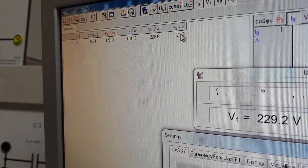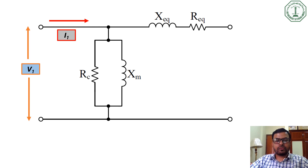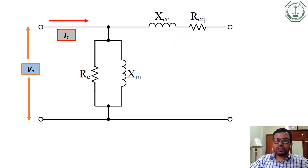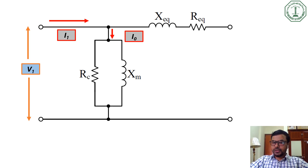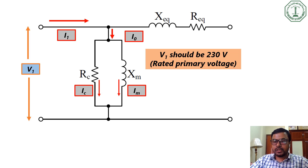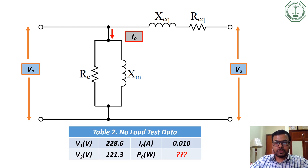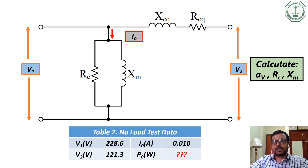During the no-load test, when we apply voltage V1 at the primary side, a current I1 will flow. Secondary side current I2 is zero as there is no load connected. Therefore, the entire current passes through the core of the transformer and divides into two branches, IC and IM. We apply 230 volts — the rated primary side voltage. From the no-load test, we measured two voltages and one current, given in the table. Using these measurements, you have to calculate no-load power, voltage turns ratio, RC, and XM.